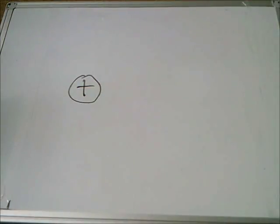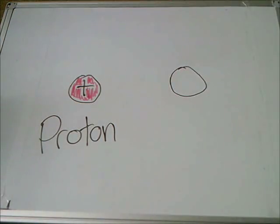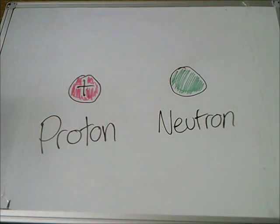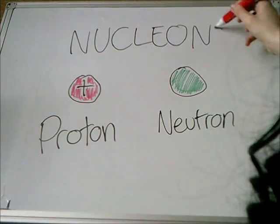The nucleus is not one big lump of stuff, but is made from positively charged protons and neutrally charged neutrons, and together these are known as nucleons.